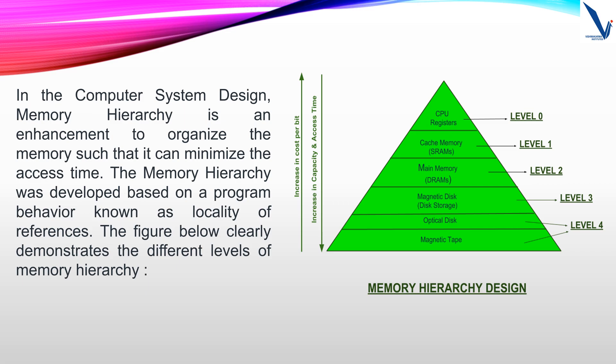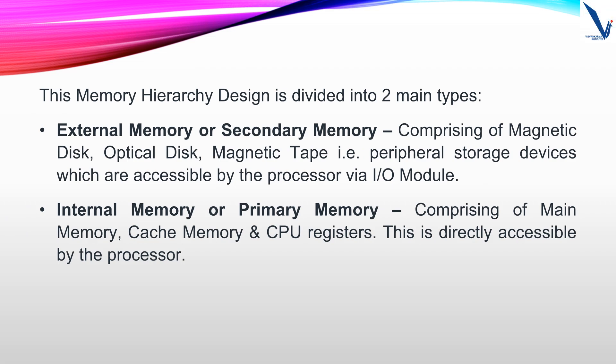As we move in the upward direction, there is an increase in cost per bit. As we come downwards, we can see increase in capacity and access time. The memory hierarchy design is divided into two main types. The first is the external memory or secondary memory, comprising of magnetic disk, optical disk, magnetic tape, i.e. peripheral storage devices, which are accessible by the processor via input-output module. Second is the internal memory or primary memory, comprising of main memory, cache memory, and CPU registers, which is directly accessible by the processor.